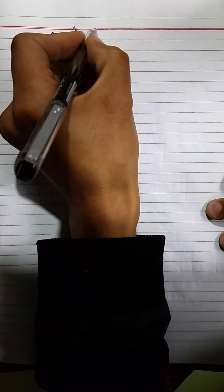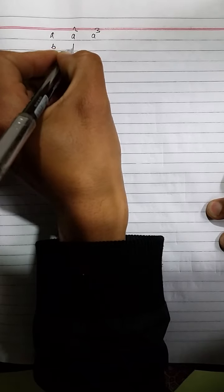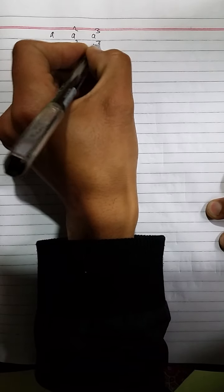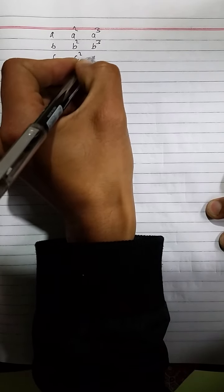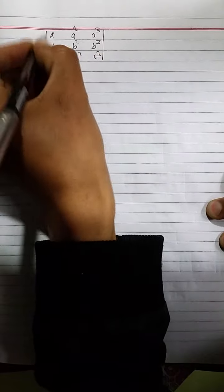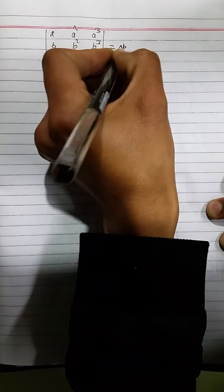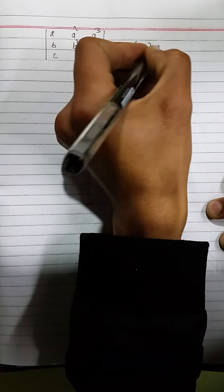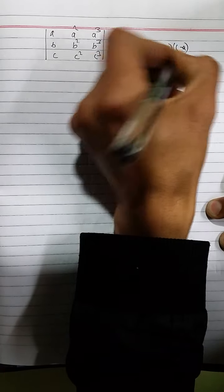A, A square, A cube, B, B square, B cube, C, C square, C cube equals to A, B, C, A minus B, B minus C, and C minus A.